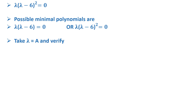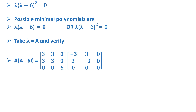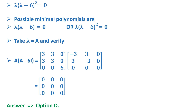We take λ = k and verify which is correct. From the first candidate, we compute A · (A − 6I): the matrix [3,3,0; 3,3,0; 0,0,6] multiplied by [−3,3,0; 3,−3,0; 0,0,0], which equals the zero matrix. Hence the correct answer is option (d): λ(λ−6).